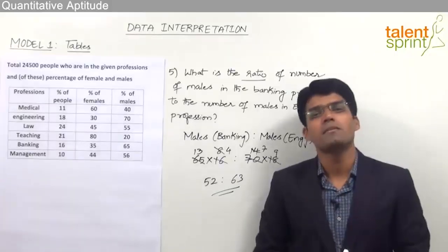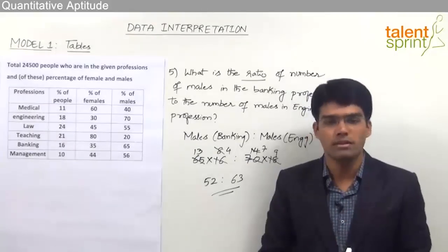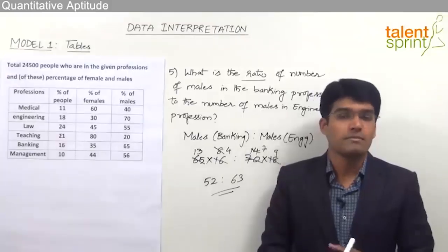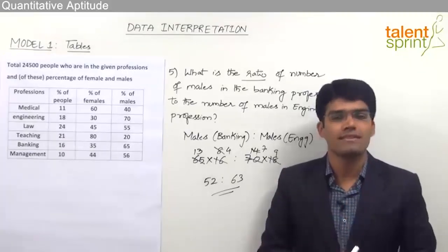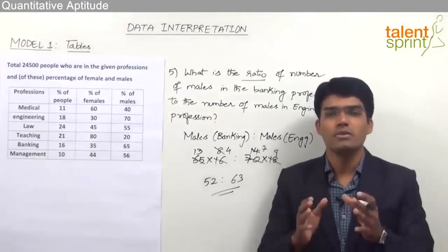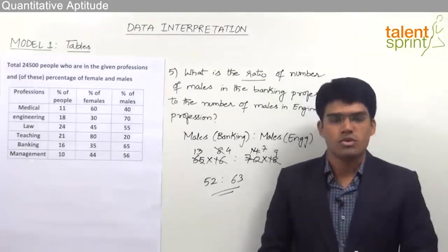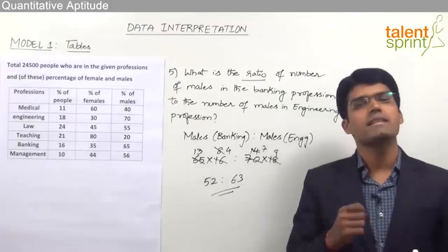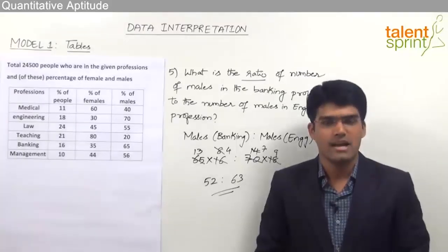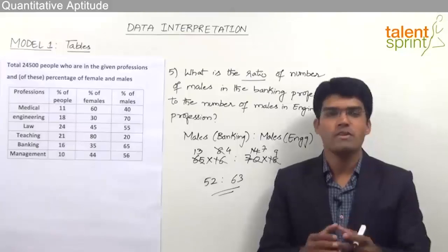One important point: if a question appears simple but will take more than 45 to 60 seconds, the best strategy is to leave it and move to the next one. Only attempt questions that can be solved in less than 30 to 45 seconds. To score more in data interpretation, practice calculations so that picking the relevant numbers and getting the answer becomes fast and easy.